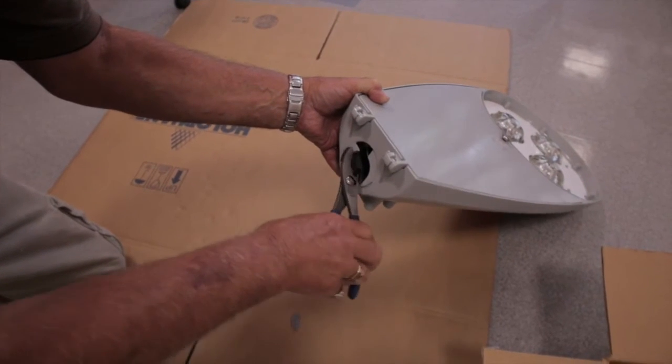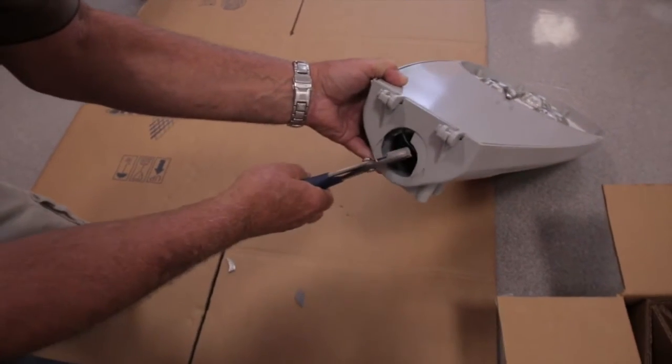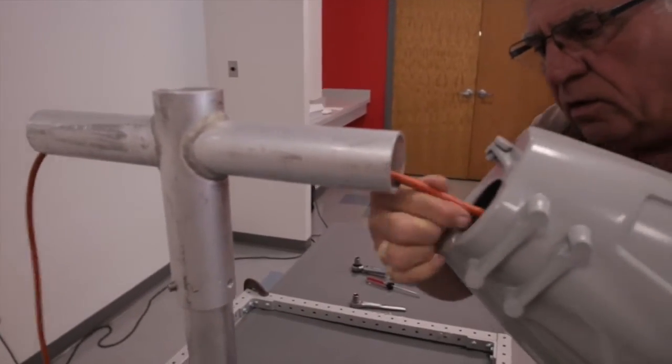If you are mounting the ATBM on a larger diameter arm, remove the two knockout plates with pliers. Now you're ready to mount the luminaire on the arm.